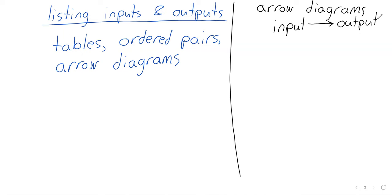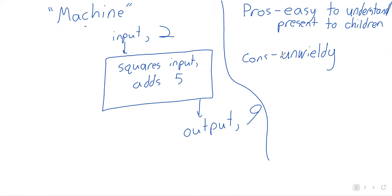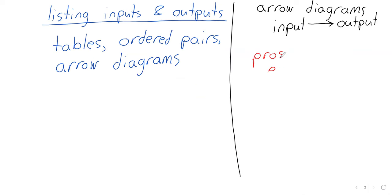The pros of arrow diagrams are very similar to the pros over here. The idea that you've got an arrow pointing from the input to the output is relatively easy to understand. If you see four going to nine, you can say, oh, when your input's four, your output's nine. It's pretty straightforward.